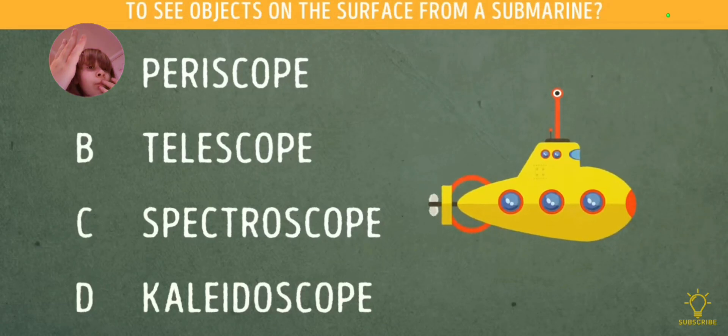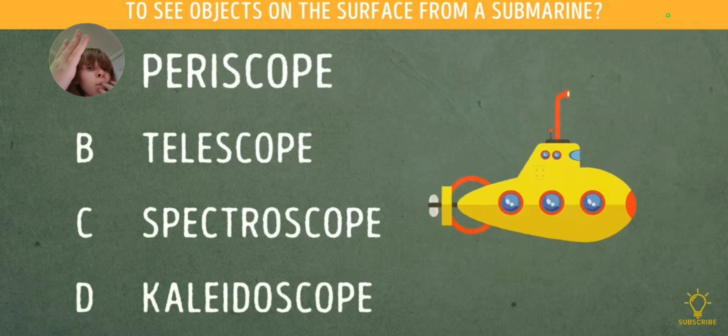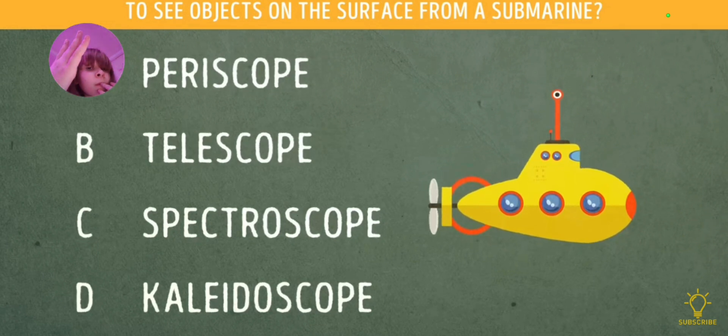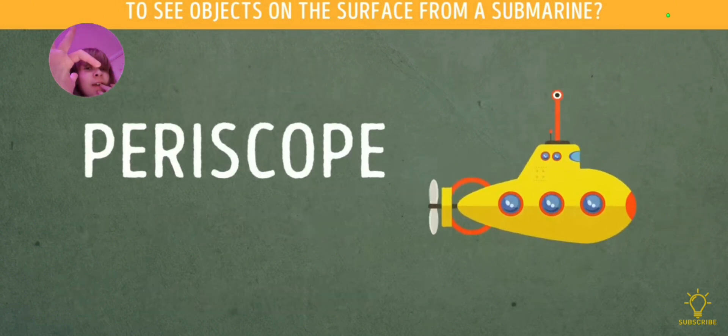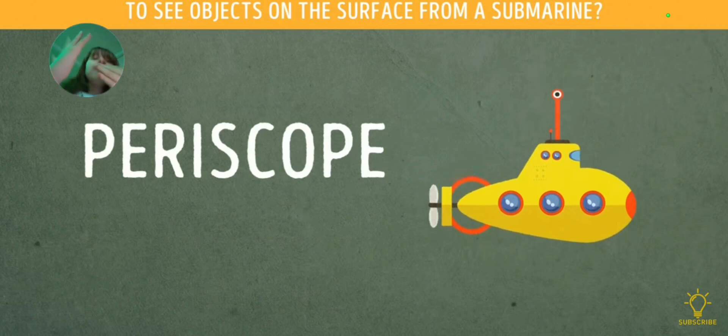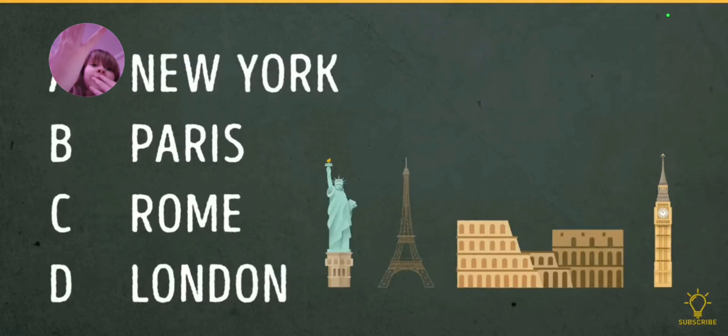Number 14. What is the name of the device that is used to see objects on the surface from a submarine? A. Periscope. B. Telescope. C. Spectroscope. D. Kaleidoscope. I think it's D or C. Alright, nice question. Sorry guys, I have already backed off.